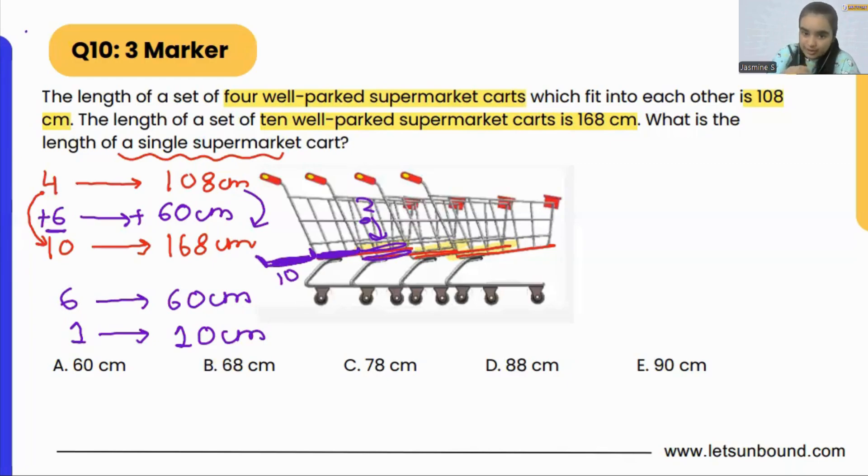So, 6 extra trolleys added 60 cm to the length of the set. From there, we figured out that each extra trolley will add up 10 cm to the set. So, here it is going to add 10 cm. Now, what we have to do, we already know that 4 well-parked supermarket carts have the length of 108 cm.